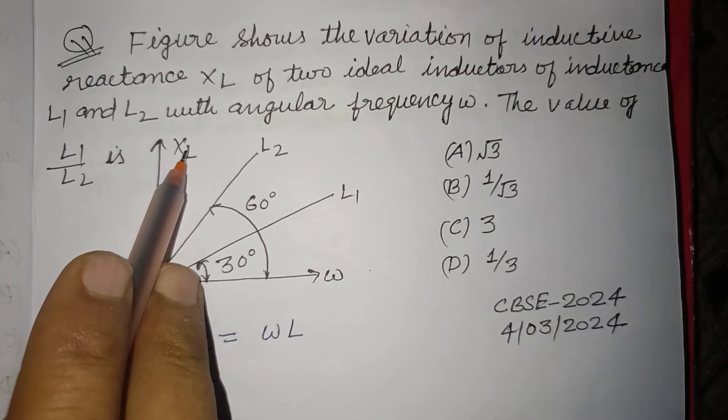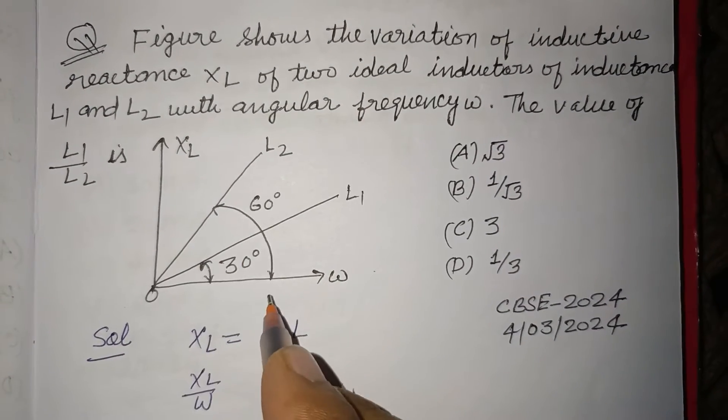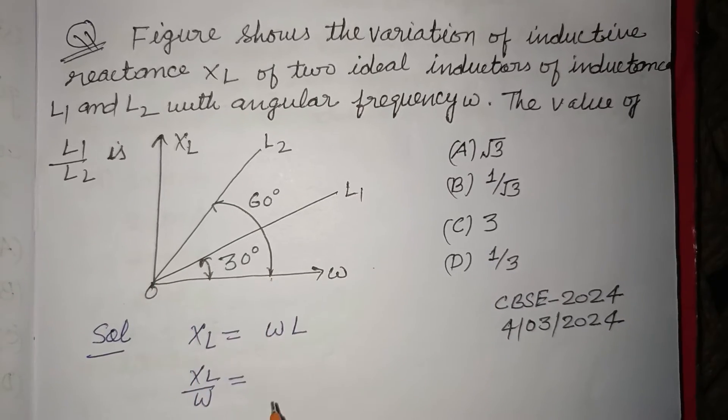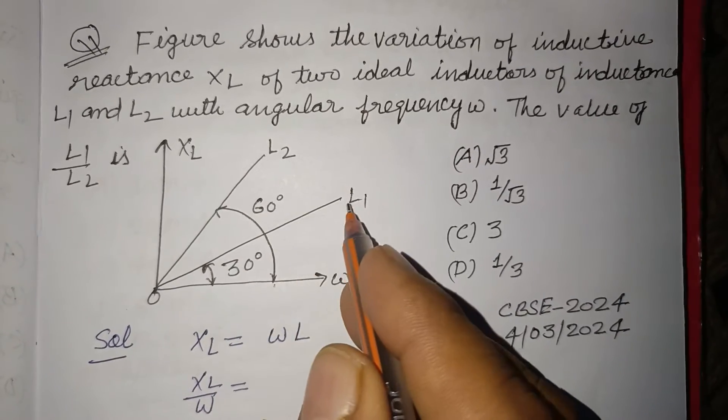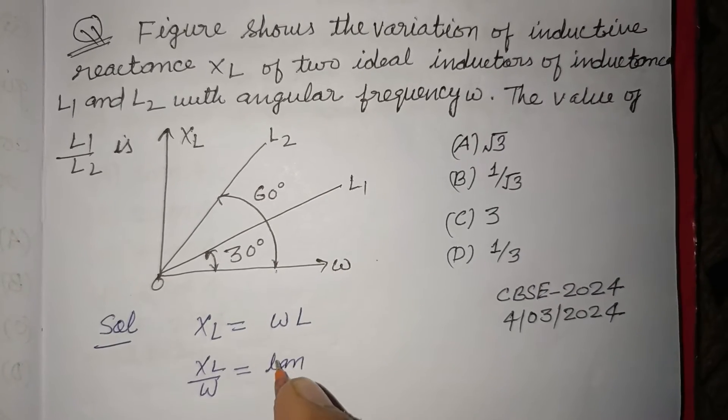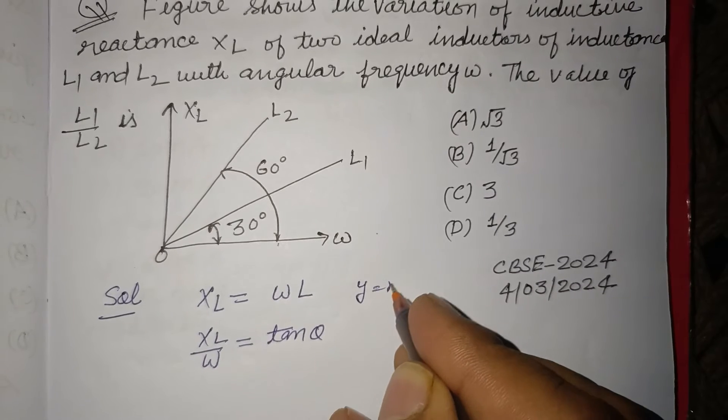So this is the gradient of the given curves. This will be tan θ, or we can take it as y equals mx, where m is the gradient, which is y over x. So XL over ω equals L.